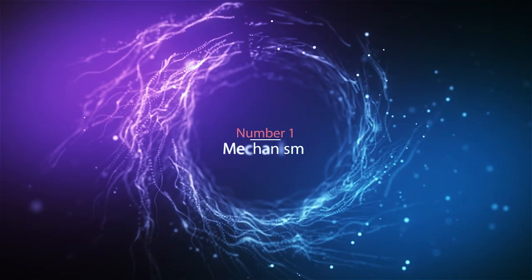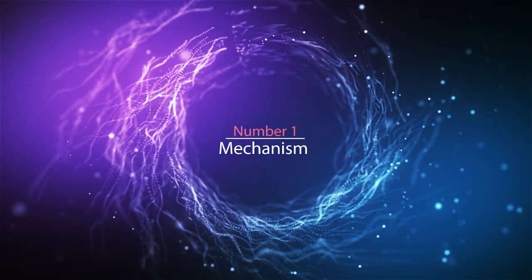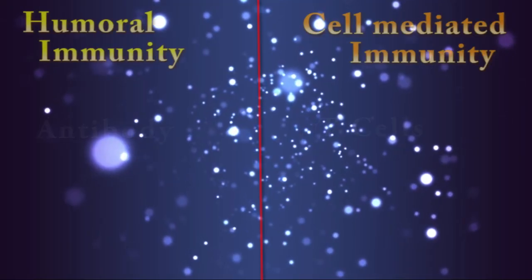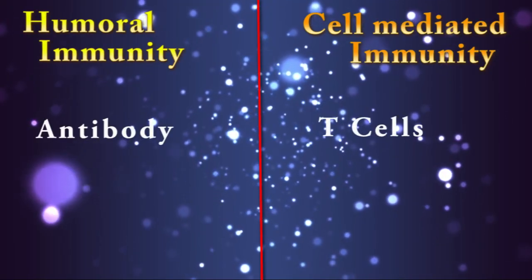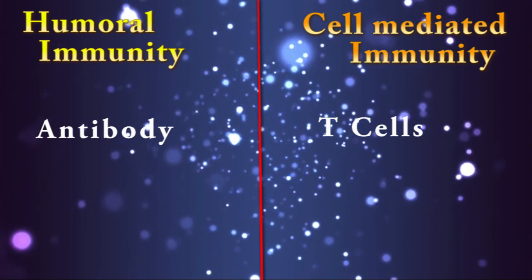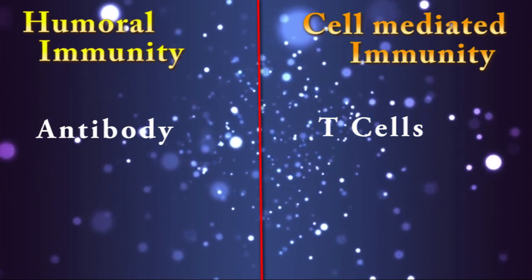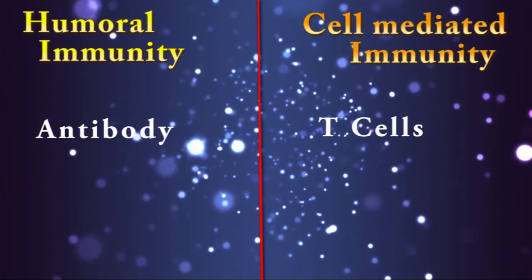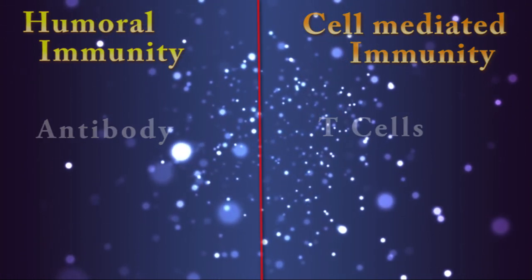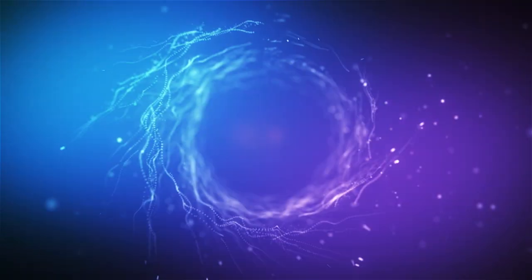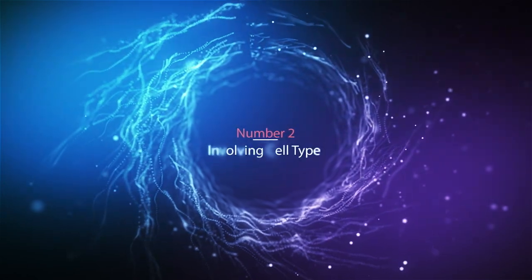Difference number 1: mechanism. Humoral immunity is mediated by antibodies, but cell-mediated immunity is mediated by T cells.